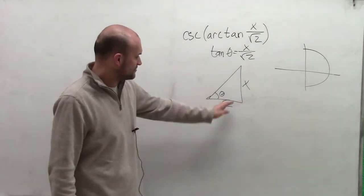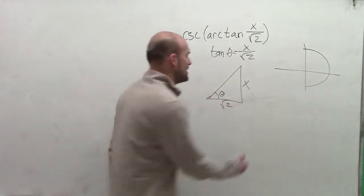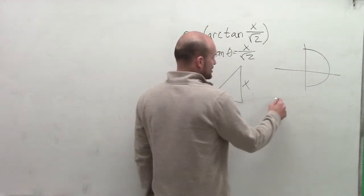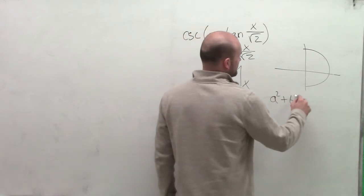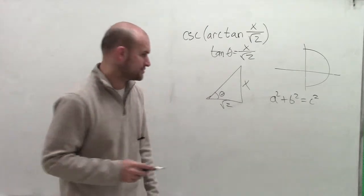And so I have theta, opposite as x, adjacent as square root of 2. I need to be able to figure out my hypotenuse. So by using the Pythagorean theorem, we say a squared plus b squared equals c squared. Or the leg squared plus the leg squared equals your hypotenuse squared.